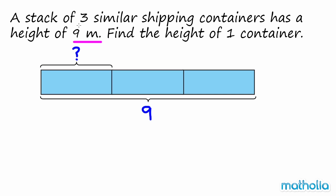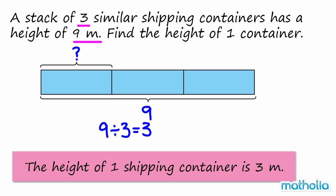There are three containers in the stack. So to find the height of one container, we must divide the total height by 3. 9 divided by 3 equals 3. So the height of one shipping container is 3 m.